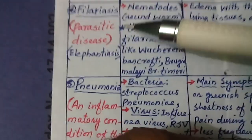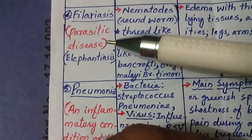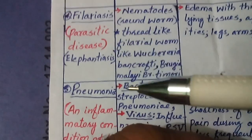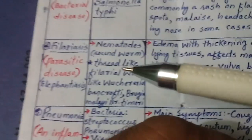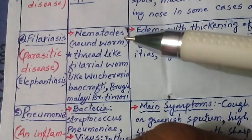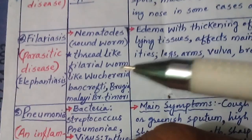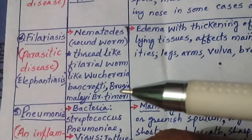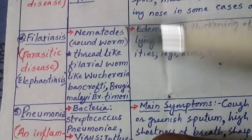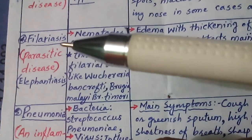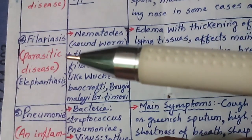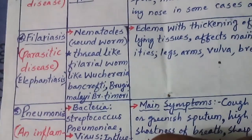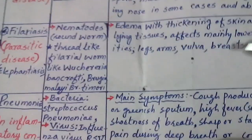The next disease is filariasis, a parasitic disease also known as lymphatic elephantiasis. Its causative agents are nematodes — roundworm thread-like filarial worms — namely Wuchereria bancrofti, Brugia malayi, and Brugia timori. These nematode roundworms are parasitic in nature, meaning they are dependent on other living organisms, feeding inside that body.